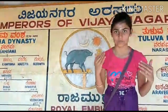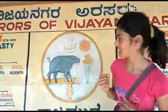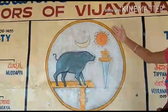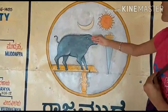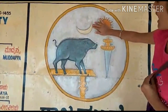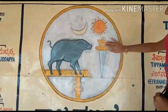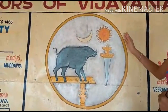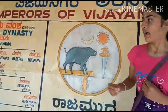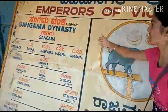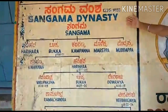I am here to share my experience about Hampi. Just behind me you can see the royal emblem of Hampi — this is the world, this is the half moon, this is the Sun, and the reverse sword, which represents the emblem of the Vijayanagara kingdom.